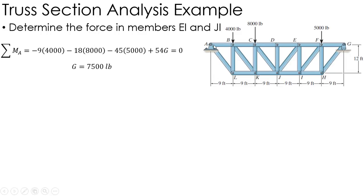So the moment about A: I have negative 9 times 4000, negative 18 times 8000, and negative 45 times 5000, then positive 54 times the reaction at G. This tells me that the reaction at G is 7500 pounds acting up.